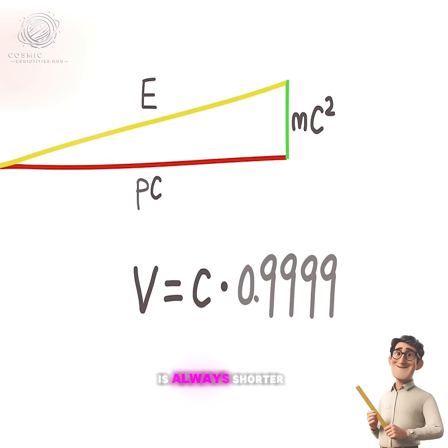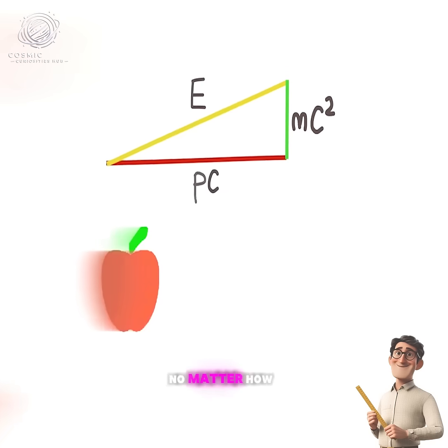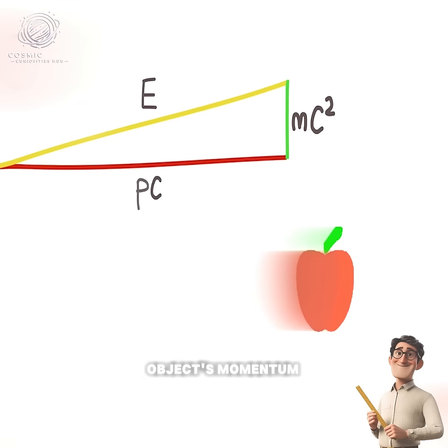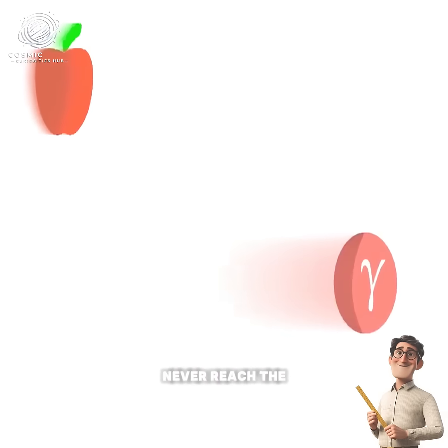No matter how you increase the object's momentum, the side pc will never reach the side E. In other words, your speed will never reach the speed of light.